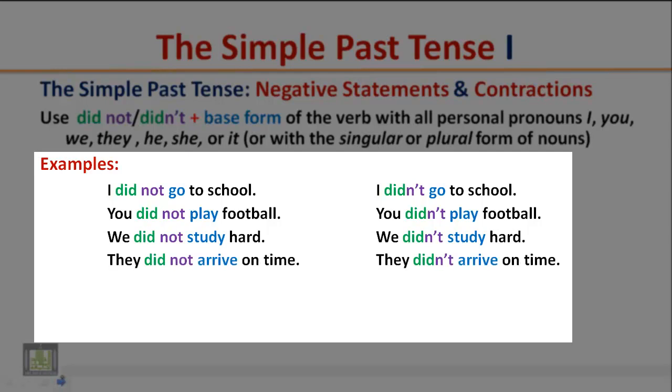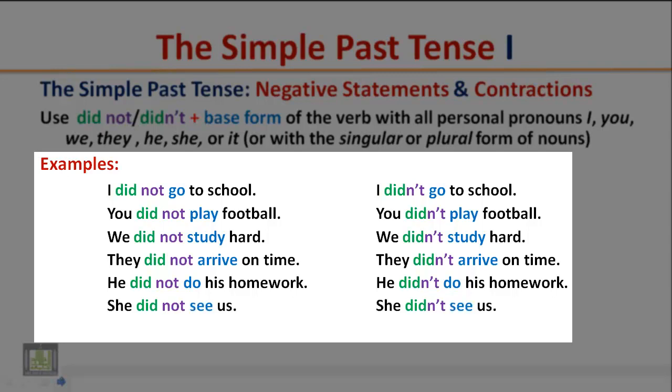They did not arrive on time. They didn't arrive on time. He did not do his homework. He didn't do his homework. She did not see us. She didn't see us. It did not rain last night. It didn't rain last night.